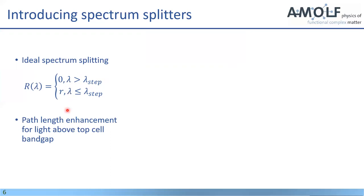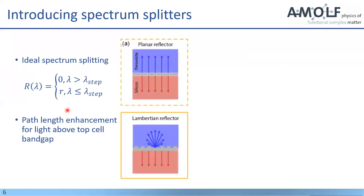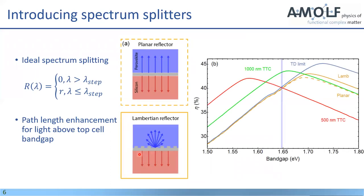Furthermore, this will give you a path length enhancement for the light that is scattered back into the top cell. And this path length enhancement is either a factor two, like in this case, or it's beyond a factor two, like in the Lambertian case that you can see here. Now, if you then collect those limits to what we saw earlier, you get the graph that you can see here on the right.